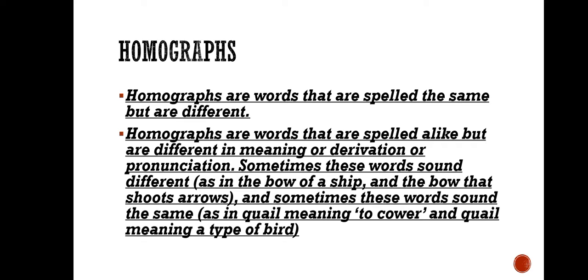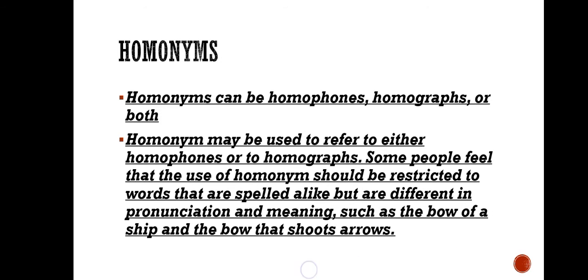In homophones also this is a little contrasting effect that it can also happen, there is a very rare chance that their spelling is the same but their major difference is that their pronunciation is the same. So if you have a homonym then it will be correct because homonyms can be both. Homonyms may be used to refer to either homophones or homographs. Some people feel that use of homonyms should be restricted to words that are spelled alike but are different in pronunciation and meanings such as bow of ship and the bow that shoot arrows. But now there is nothing like that so homonyms are used for both homophones and homographs.